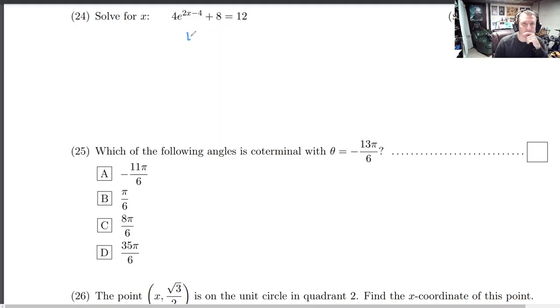So we'll subtract 8 over. 12 minus 8 is 4. Then we'll divide by 4.